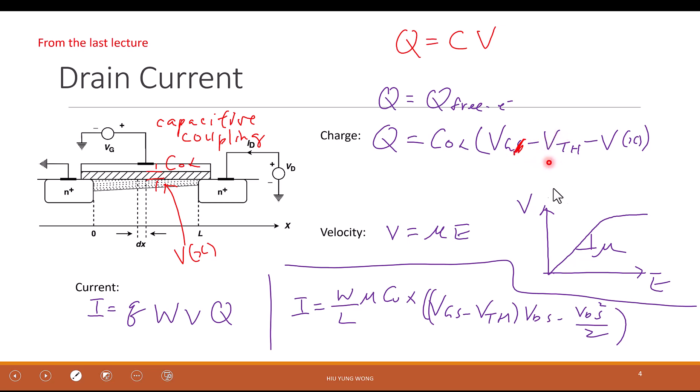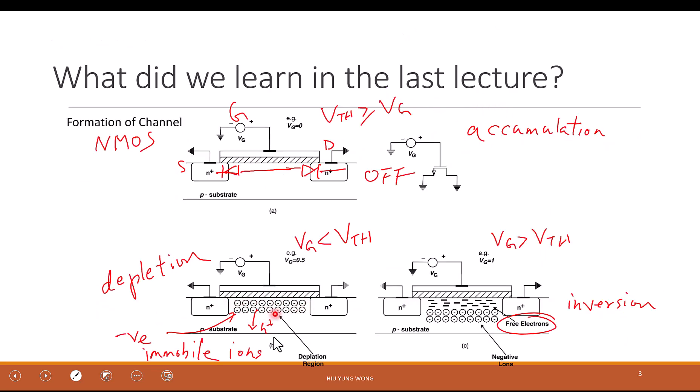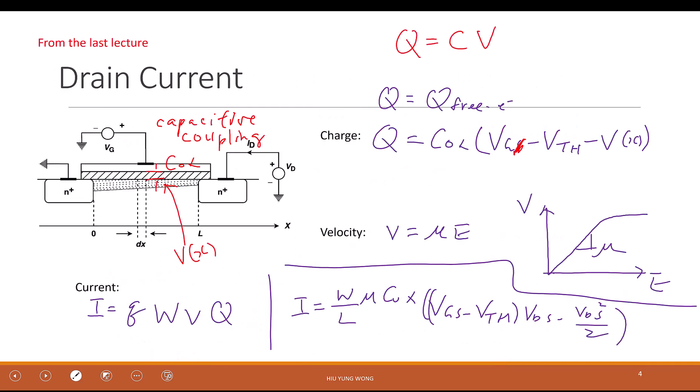Now, but then why we subtract also the threshold voltage? Because it is only after the threshold voltage would it induce some free electrons. Before the threshold voltage, it does induce charge, but they are not mobile. They are not contributing to the current. That's why, if I want to know how much free electrons it has, I actually multiply by Vg minus Vx minus Vth. Because Vg minus Vx is the voltage across this capacitor.